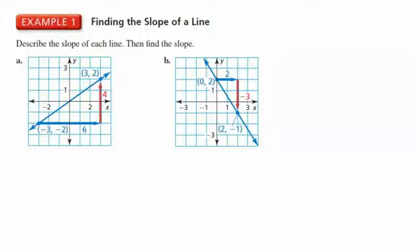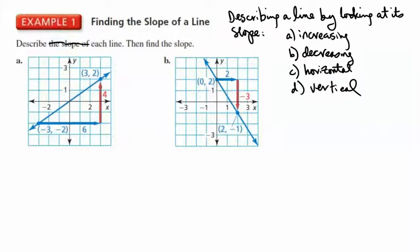Let's look at some examples. We want to do two things: describe each line and then find the slope. The words we want to use to describe the line are increasing, decreasing, horizontal, or vertical. We're going to describe lines by looking at their slopes, describing them in one of these four ways — increasing, decreasing, horizontal, or vertical.